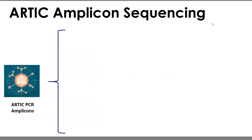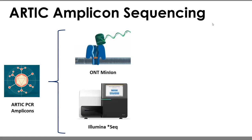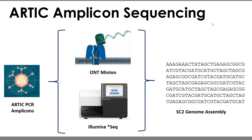When considering ARTIC amplicon sequencing, because we have amplicon products, you can choose from really any next-generation sequencing platform. The protocol was originally developed with the Oxford Nanopore Technology MinION device — Utah and Minnesota both utilized the ONT MinION. Utah also elected to do Illumina MySeq, generating a cDNA library. You can sequence on any platform of your choice. The objective is to get to a genome assembly that can be deposited to international repositories for surveillance of this outbreak.